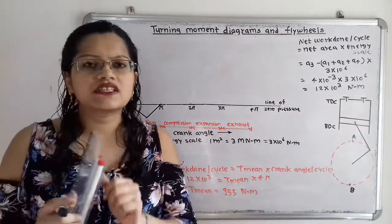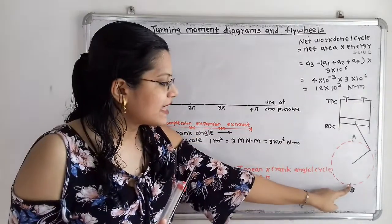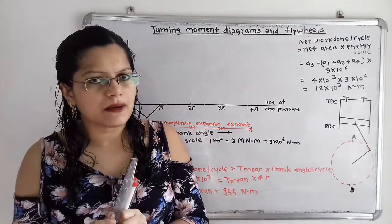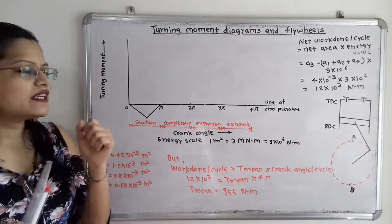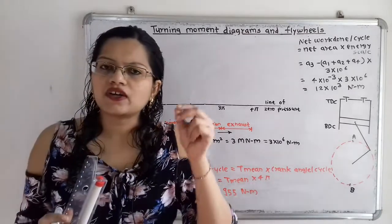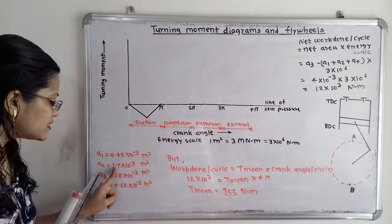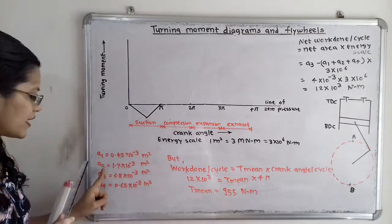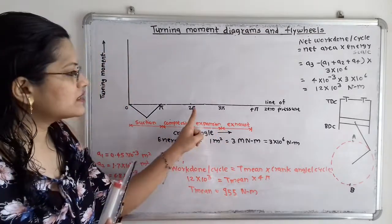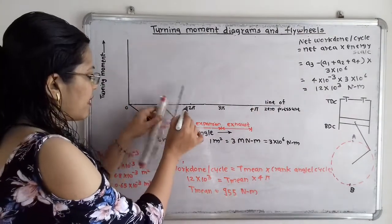During the compression stroke, the piston moves from BDC to TDC, the air-fuel mixture is compressed, and both valves remain closed. The crank moves from point B back to point A, completing another half revolution, so the angle covered is again pi — giving a total of 2pi. Work is done on the gases again, so area A2, which is 1.7 × 10⁻³ m², is shown below the line of zero pressure.